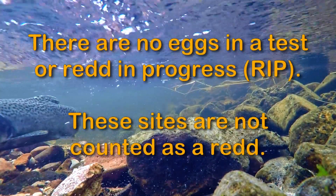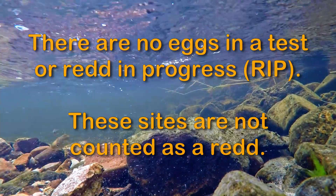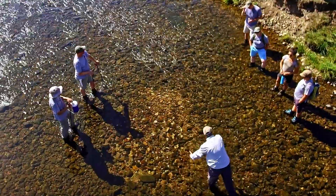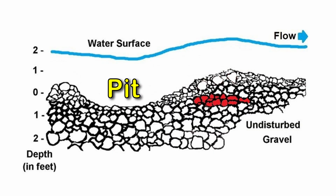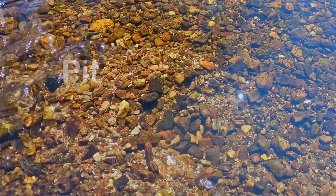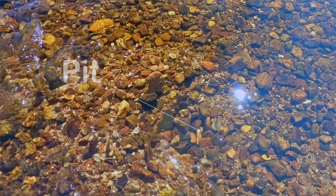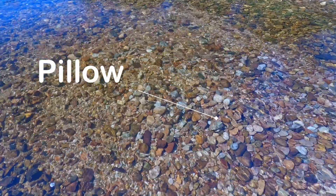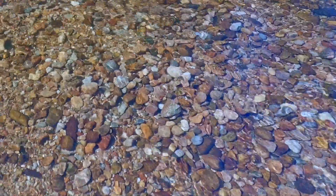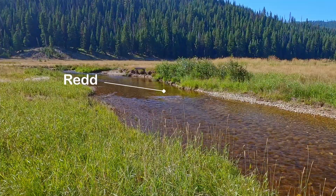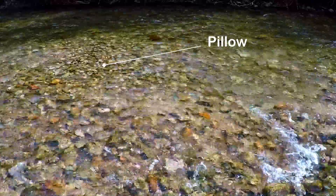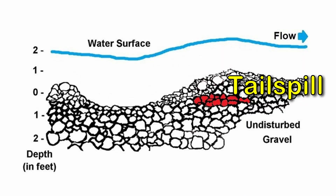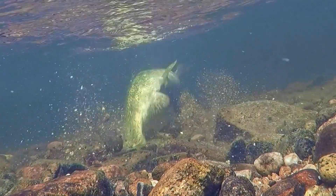There are no eggs in a test or red in progress. These sites are not counted as a red. A site will have definition that suggests it is a red. The pit is a depression created by the displacement of material used to cover and protect the eggs located immediately downstream. The pillow contains assorted gravels that cover and protect the eggs; the interstitial spaces between the gravels allow oxygenated water to reach the eggs. The tailspill consists of lightweight, fine material that is sorted and displaced downstream during red construction.